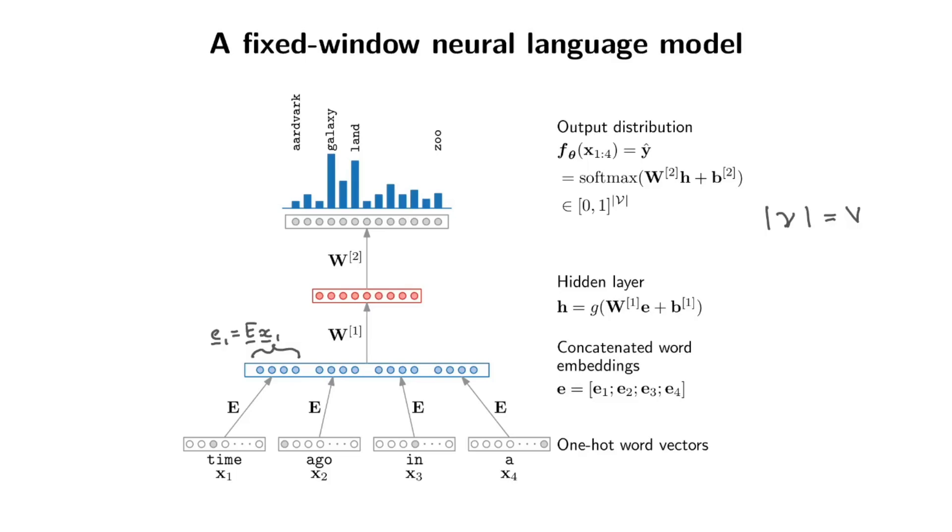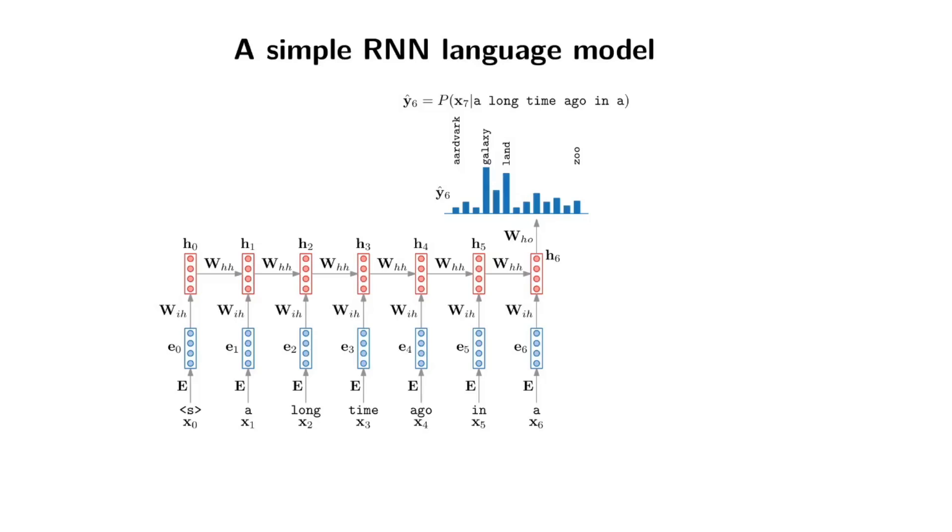Instead of introducing a recurrent neural network in a formal way I'm just going to jump straight into an example and fortunately it's going to be a familiar example because I'm just going to do language modeling with a recurrent neural network. Here is a simple recurrent neural network language model. What this model predicts at the output is the next word that comes in the sequence because we're training it for language modeling.